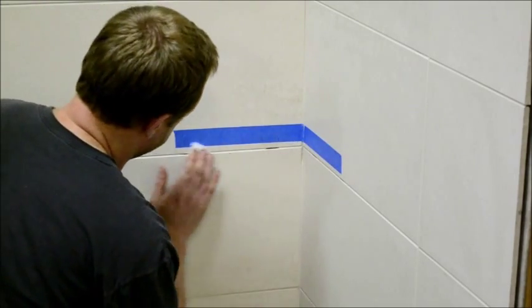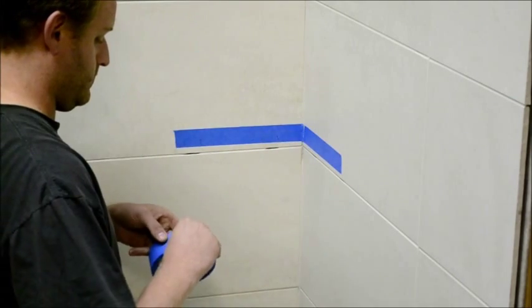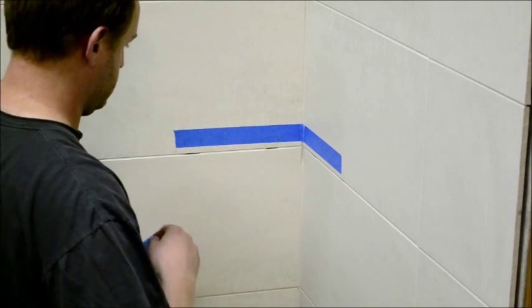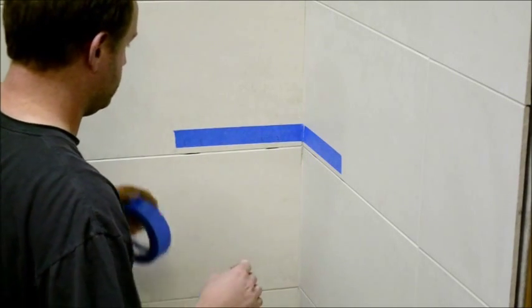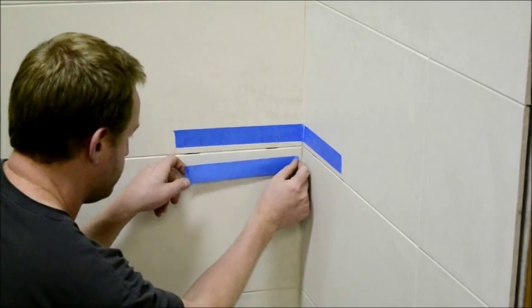After the surface is cleaned, apply blue tape right below where the bottom of the shelf will be after it is mounted. Applying blue tape allows for easier clean up if any of the epoxy should drip onto the surrounding tiles.